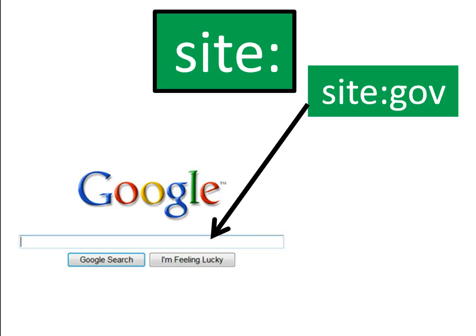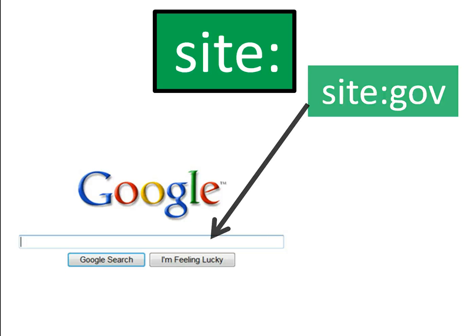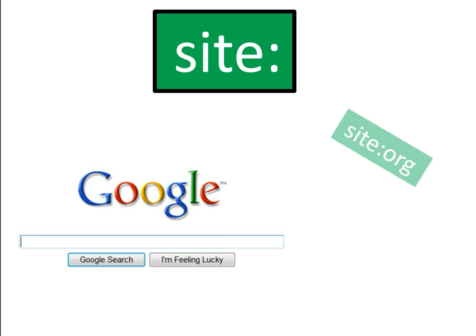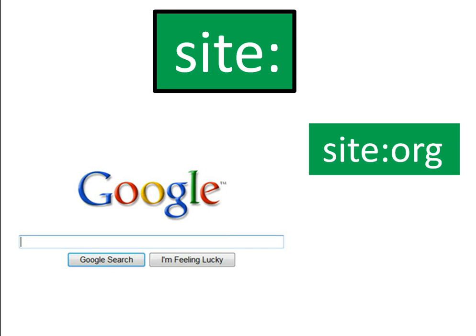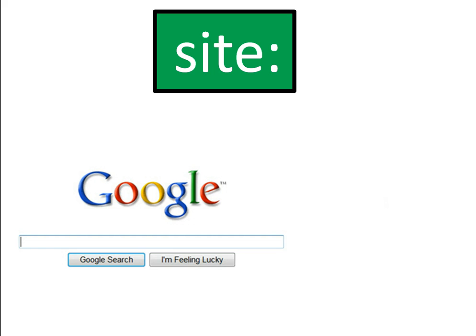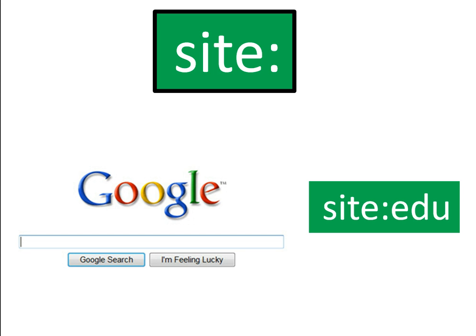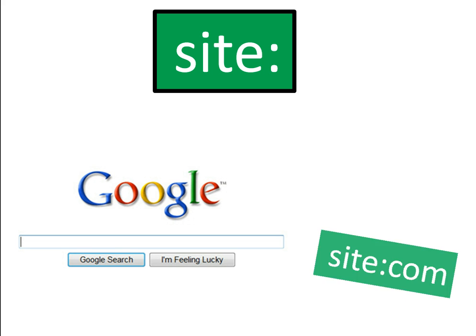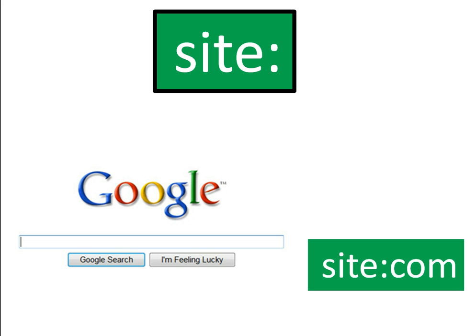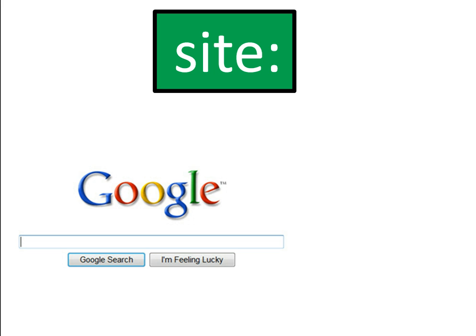These websites may come from all levels of government, such as city, county, state, and national jurisdictions. Similarly, you can use "site:org" to limit your results to organizational websites — that is, websites with ".org" in the web address. And you can use "site:edu" to see only educational websites in your search results, or "site:com" to see only commercial websites. This site colon search strategy gives you a lot more power when you search and allows you to limit your results to the type of website that you want.